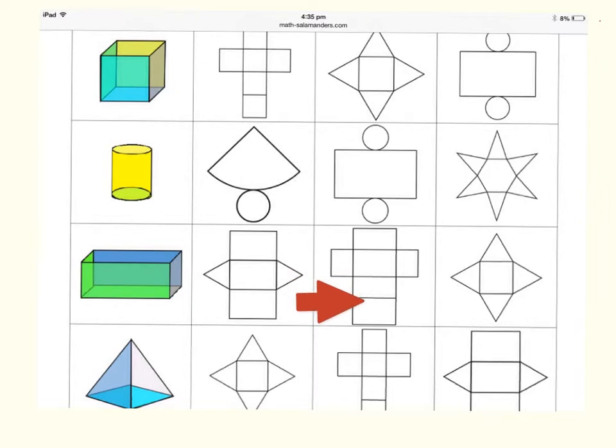If we join this one together, it's a little bit like the cube, isn't it? That is definitely going to be our net for the cuboid. Not this one, because cuboids do not have triangles.